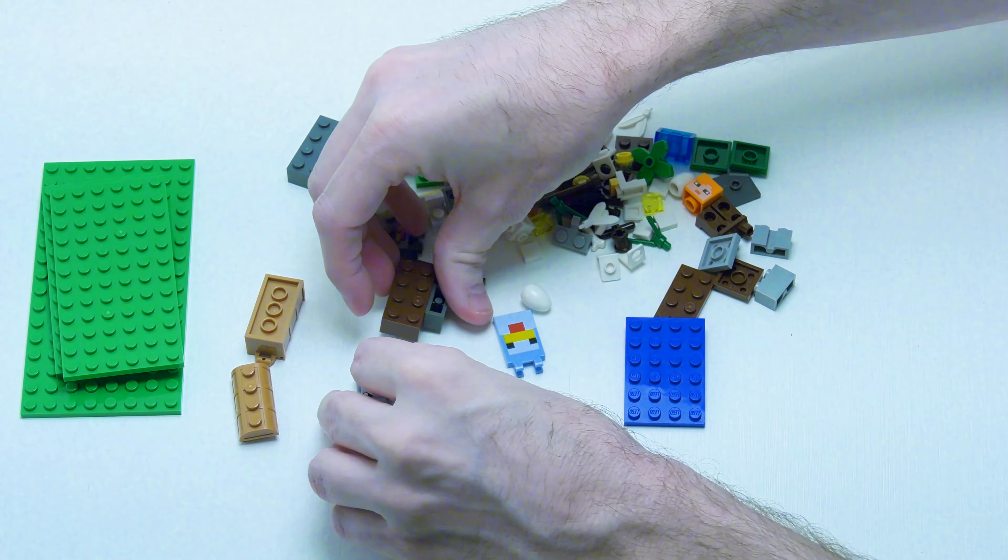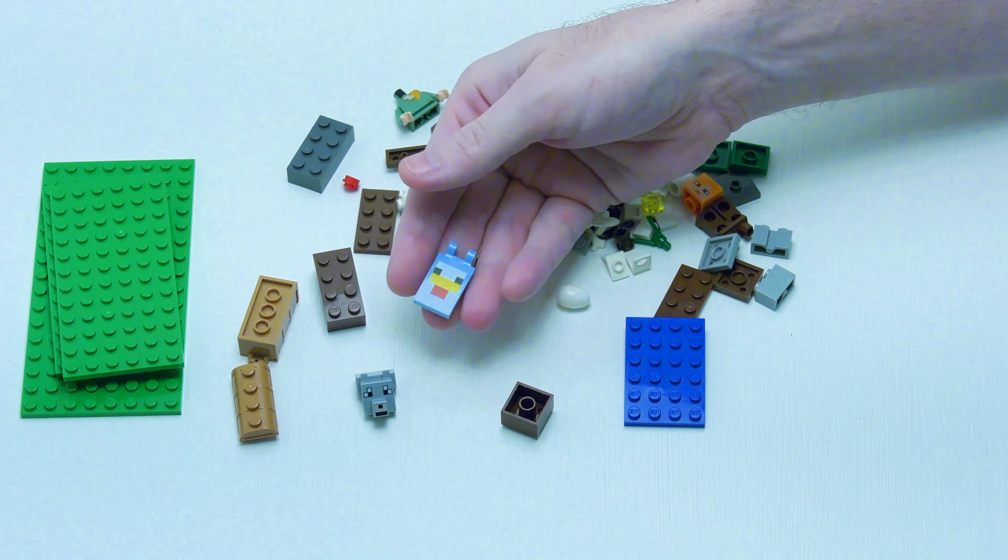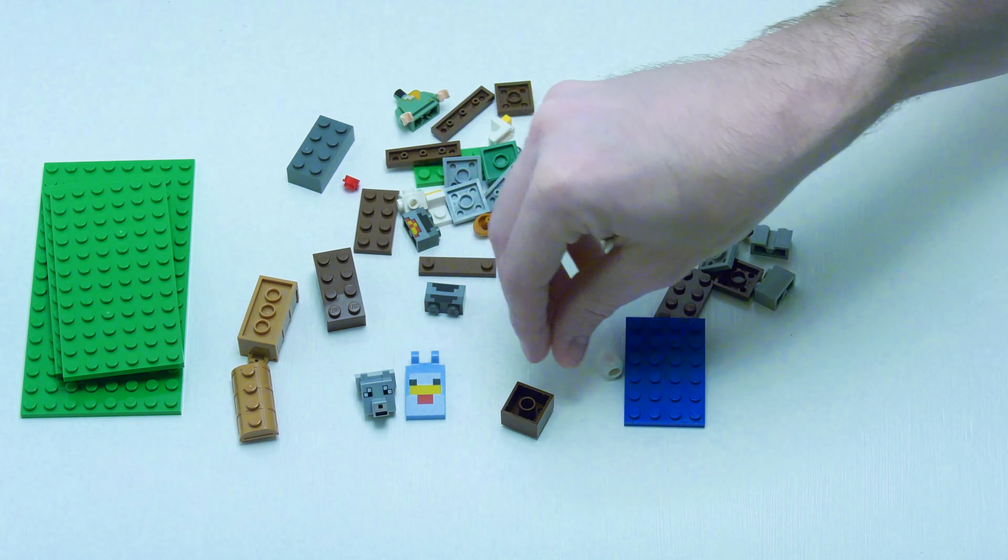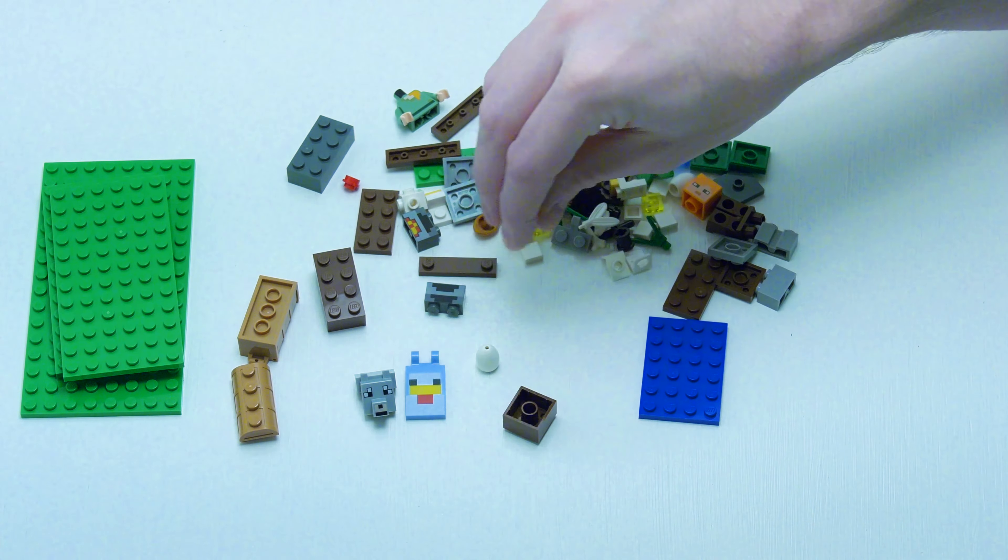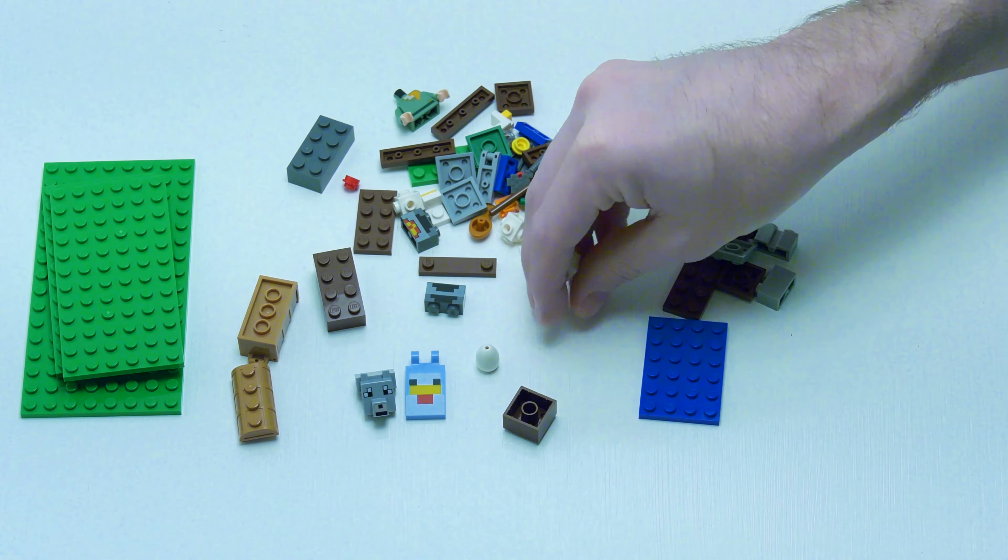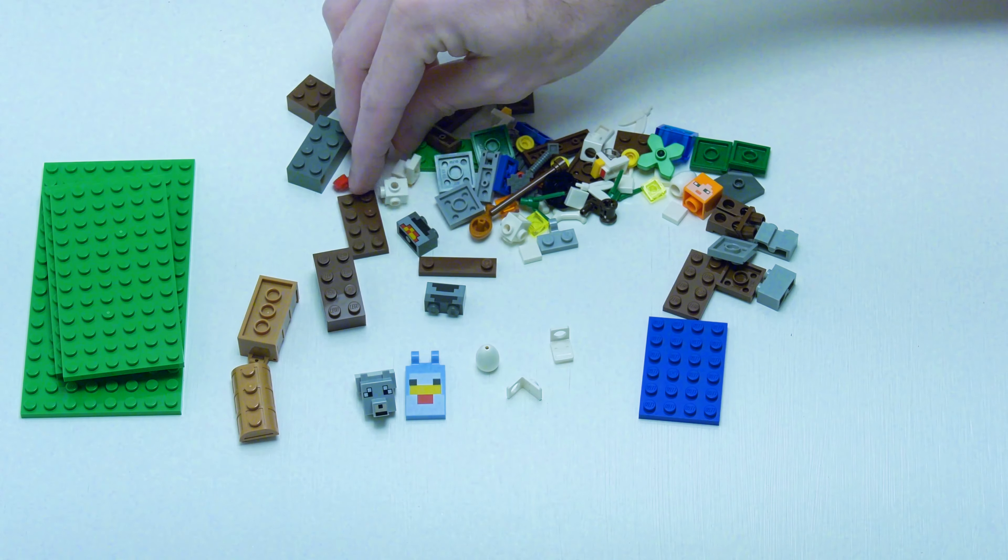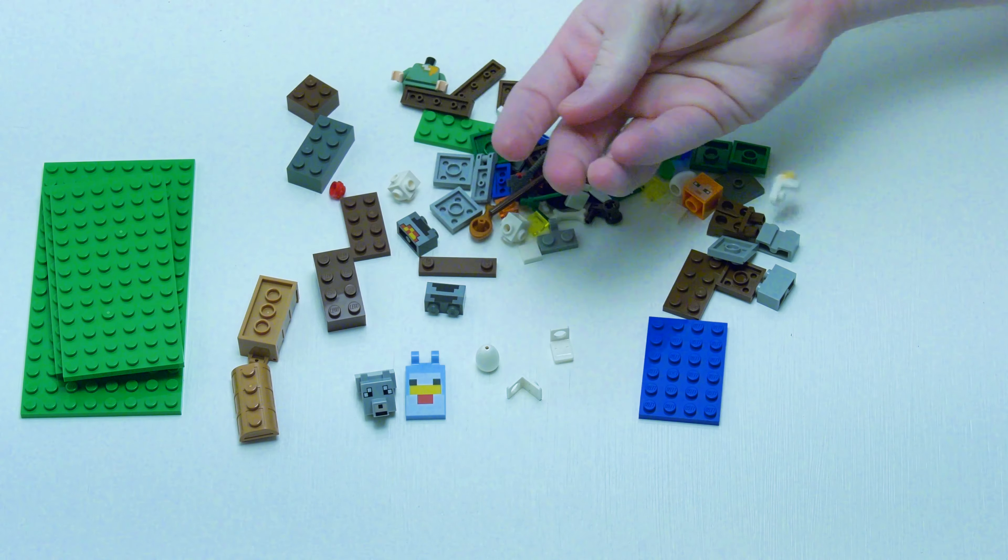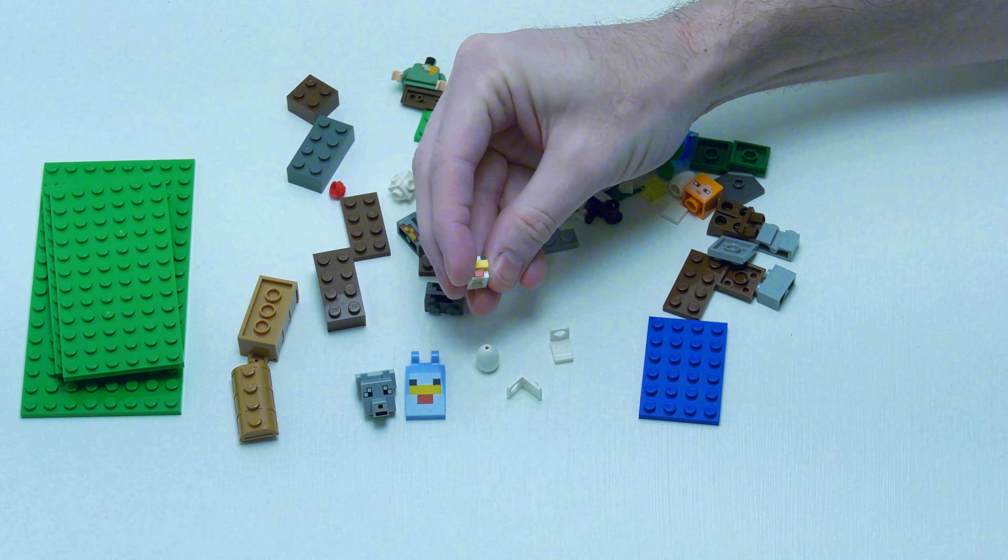This treasure chest. Here's the tame wolf's head. I like that, a printed chicken flag. We got an egg. How many of those eggs do we have in there? A couple of those minifigure accessory hangers. Here's the chicken head.